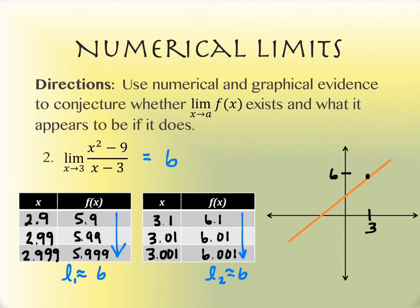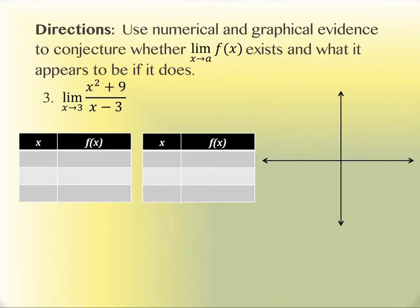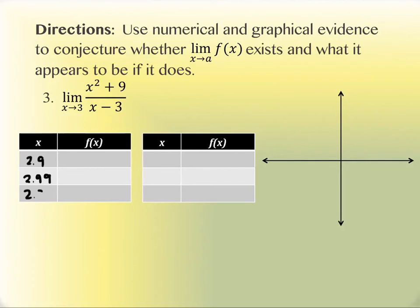The next example looks almost the same — the only difference is that the numerator has a plus sign instead of a minus sign: (x² + 9)/(x − 3) instead of (x² − 9)/(x − 3). That's a sum of squares on top instead of a difference of squares. The process is the same, but changing that one thing changes everything about the outcome.